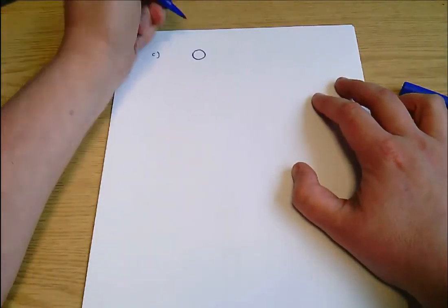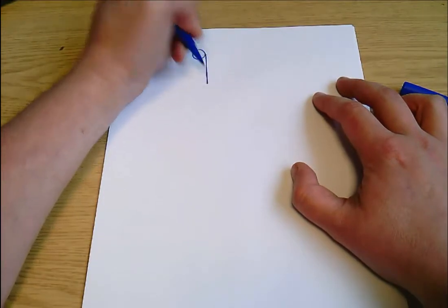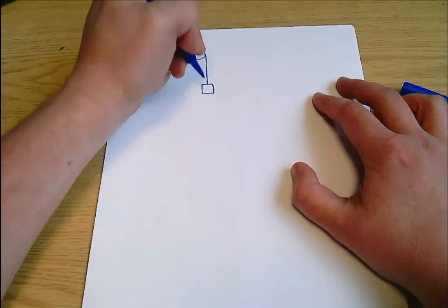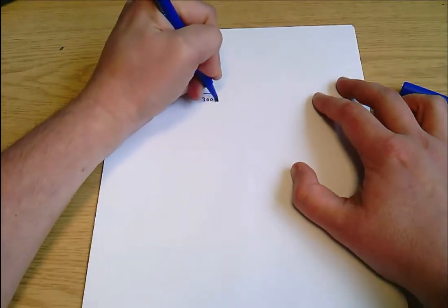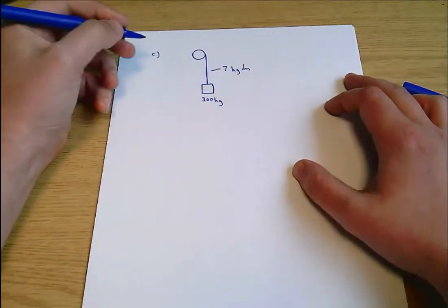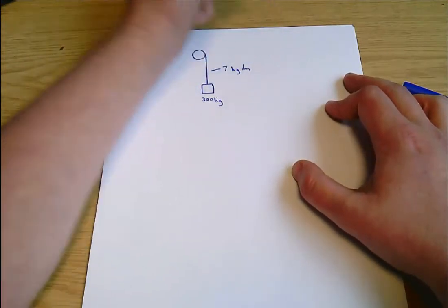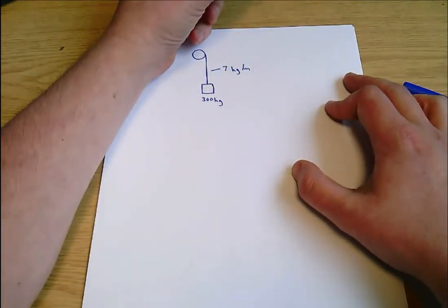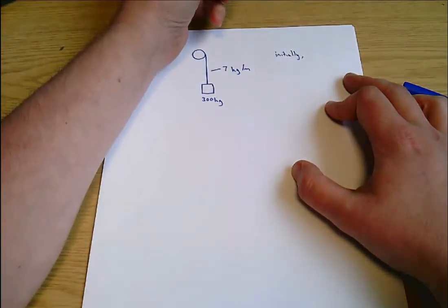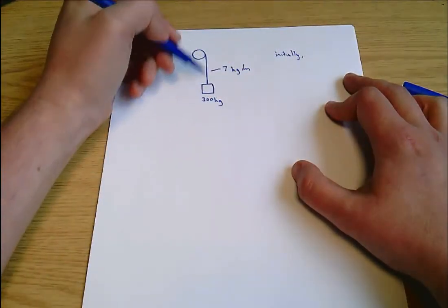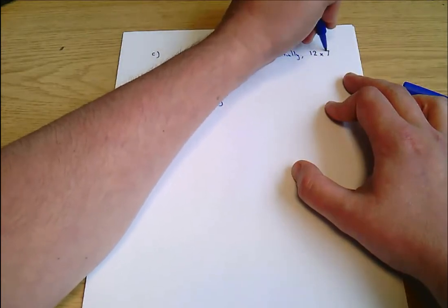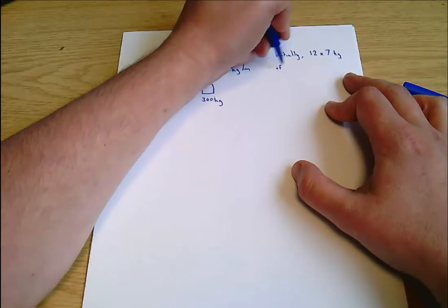Let's just take a look at this question. It's helpful sometimes just to sketch out an idea of what's happening here. So you've got a drum with a cable feeding off it. This weight is 300 kilograms and this cable is 7 kilograms per meter. Initially you're lifting through a height of 12 meters. Initially the full 12 meters is unreeled, so there are 12 times 7 kilograms of cable to be lifted.